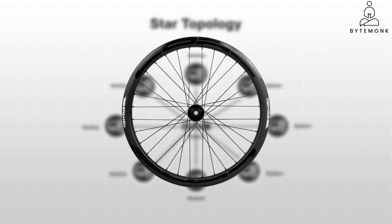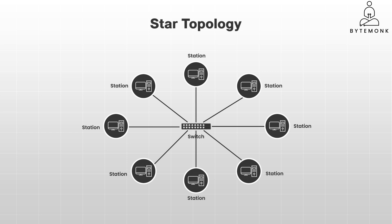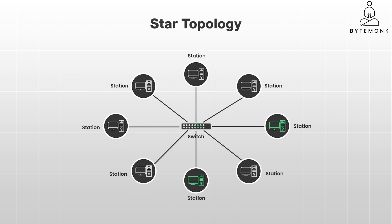Think of a bicycle wheel, where the central hub is connected to each spoke. In a star topology, the central device — such as the hub, switch, or router — is the hub of the wheel, and the spokes represent the individual cables connecting to each device. When a device wants to send data to another, it sends it to the central hub, which then forwards the data to the correct recipient. The central hub manages all communication and traffic flow in the network.